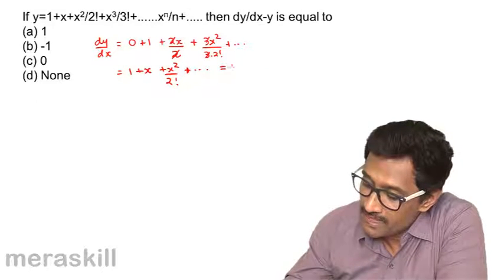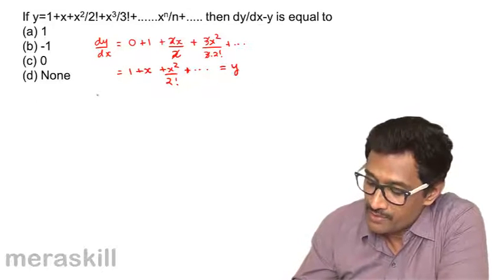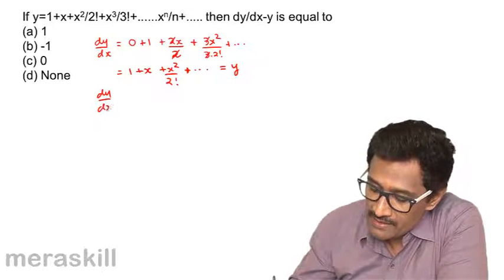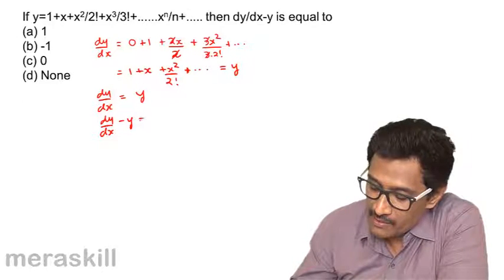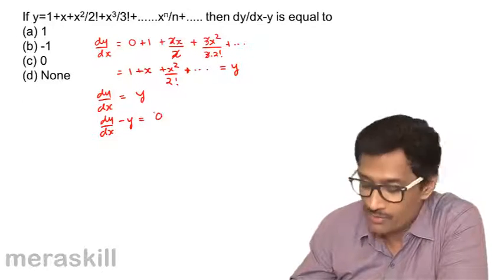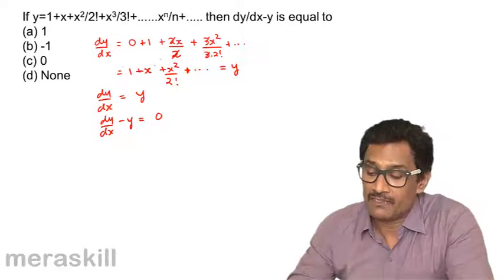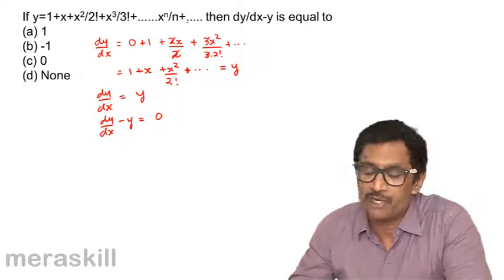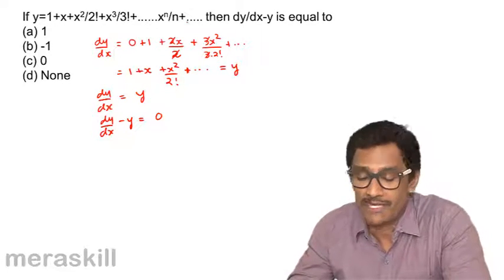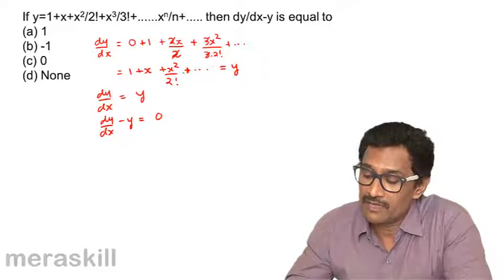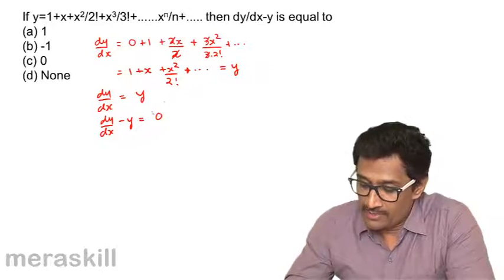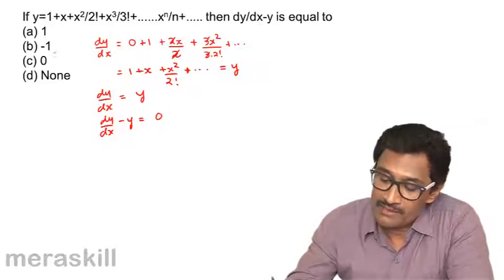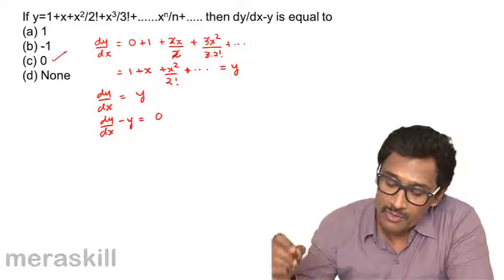Hence dy/dx is the same as y. So dy/dx = y, which means dy/dx - y = 0. When you find the derivative, you get the same function, simply because it's an infinite series. dy/dx - y = 0, and the answer is 0.